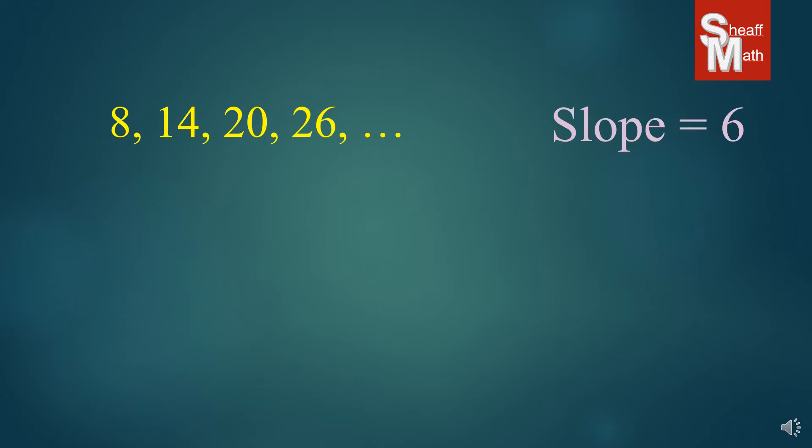Now, why is it that we need to write a linear equation for this? Well, if I told you to find the fifth number in this sequence, it probably wouldn't be that hard. You would just add 6, right? And then the sixth number, you would add another 6. And the seventh number, you would add 6. But what if I asked you to find the 200th term?